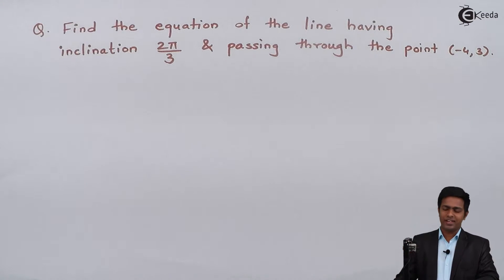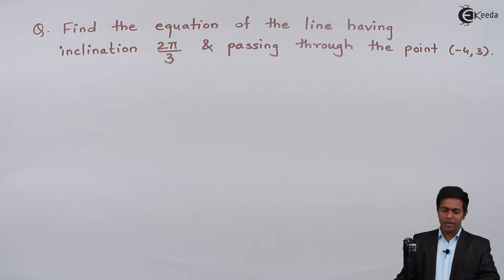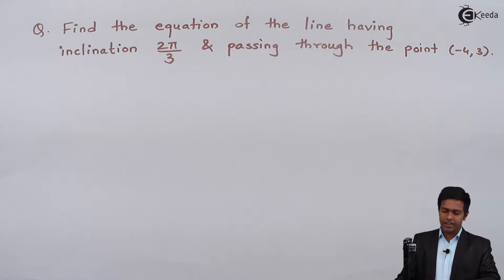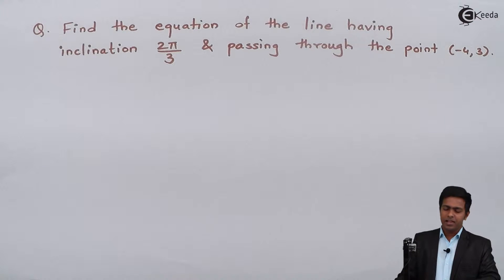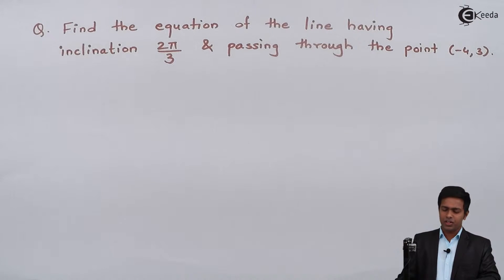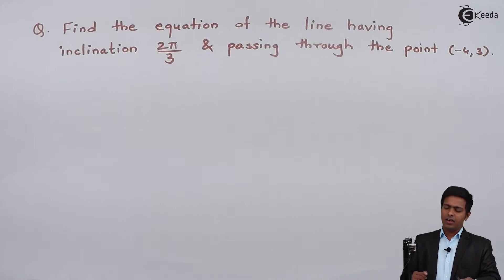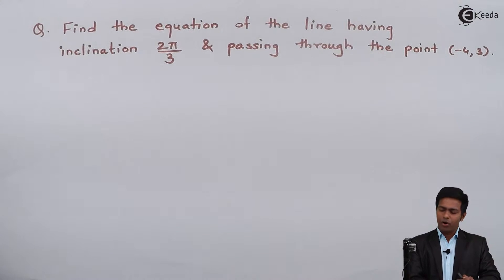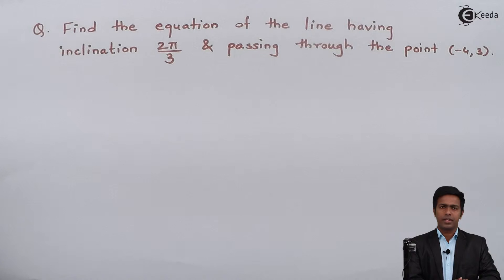Hello everyone. In this problem we have to find the equation of the line having inclination 2π/3 and passing through the point (-4, 3).